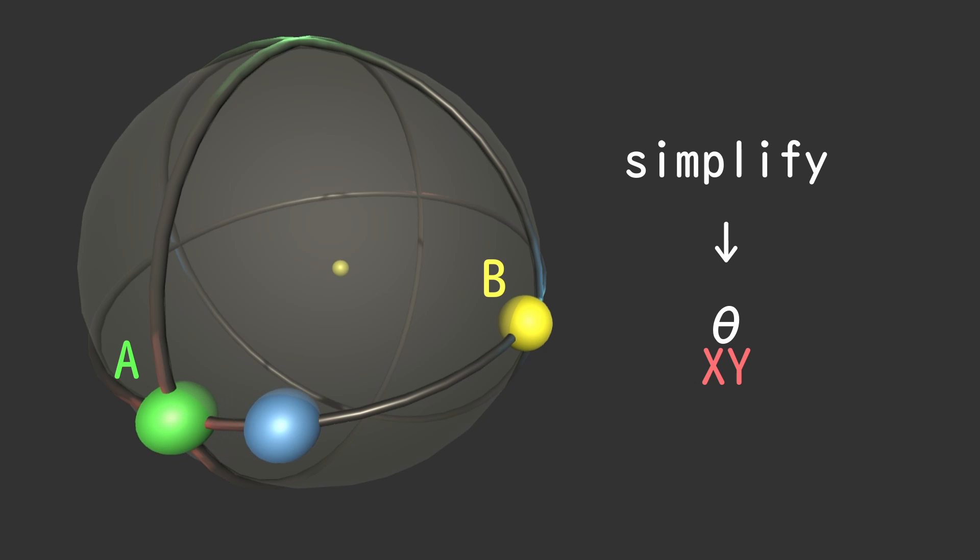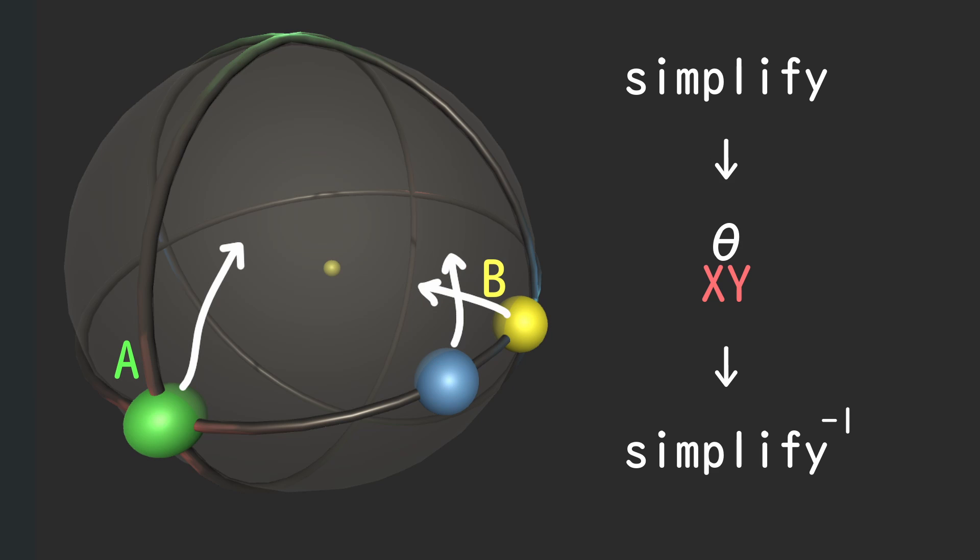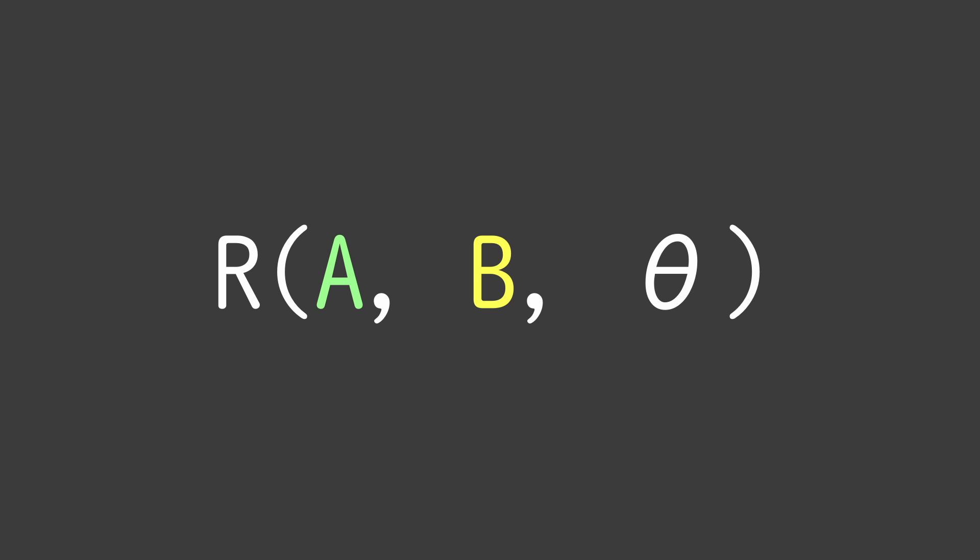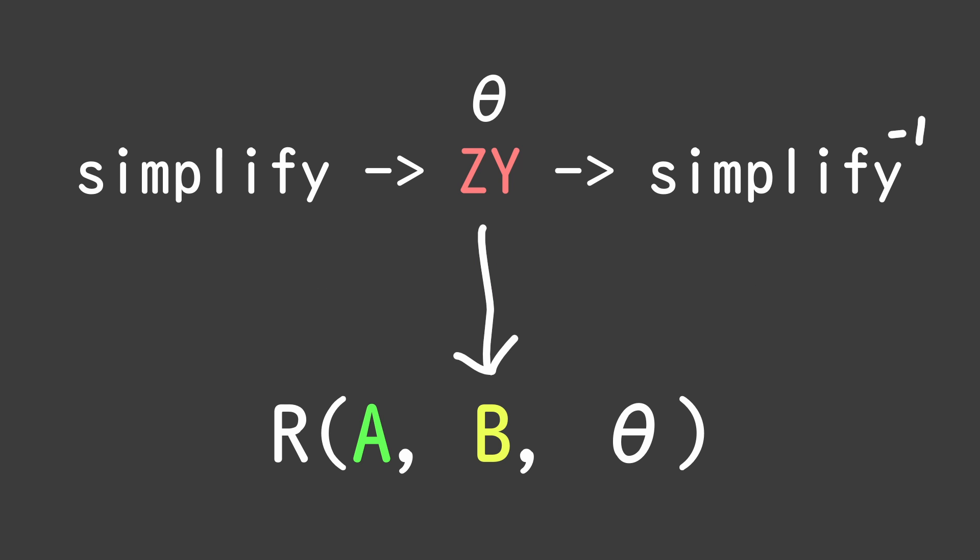Now, we do xy rotation by theta degrees in our ideal case and apply unsimplifying rotation. With that, we solved the problem of rotating from A to B by theta degrees in four dimensions. You might have guessed, but this is extendable to any number of dimensions.